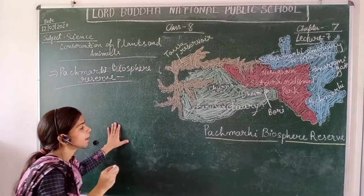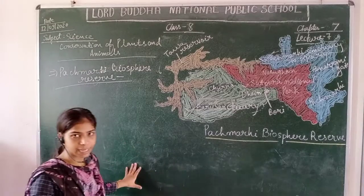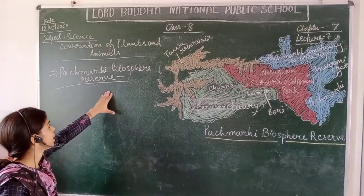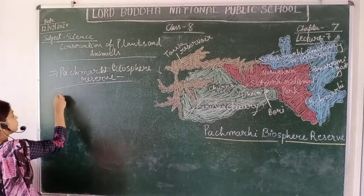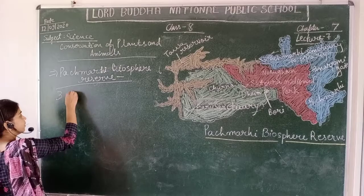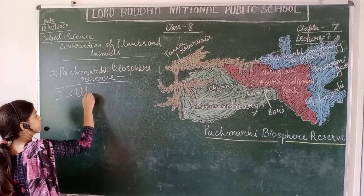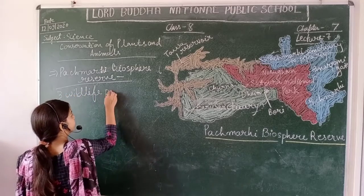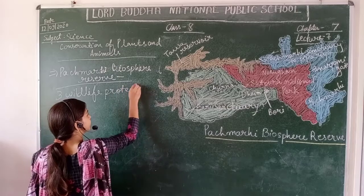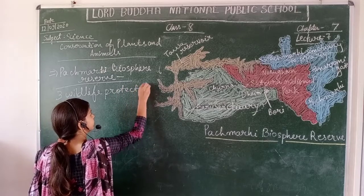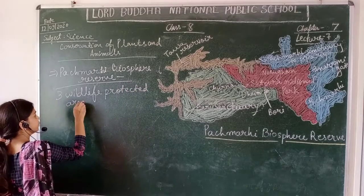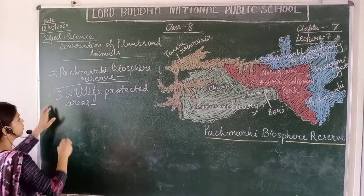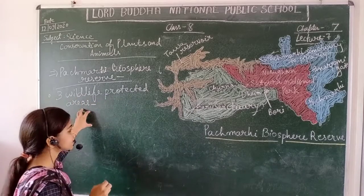There are 3 wildlife protected areas in the Pachmari balanced area — 3 wildlife protected areas.